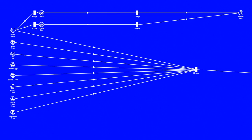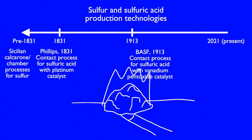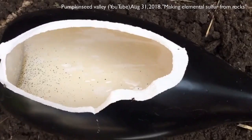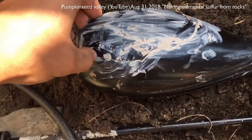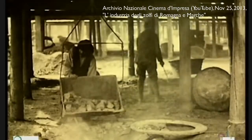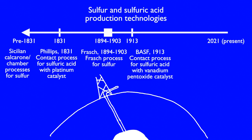For example, if I find a sulfur ore like pyrite, I would need to use a Sicilian calcarone process where I pile up the ore over a trench and set up a fire underneath it, or use a chamber process where I put the ore into a container and build a fire around it. Such a process had been demonstrated by YouTube creator Pumpkin Seed Valley in a 2018 video, but it was a whole lot less gentle and less controlled than electrolysis. The Frasch process, developed by Hermann Frasch between 1894 and 1903, involves drilling a well a few hundred meters deep into a sulfur deposit, pumping boiling water into the well to melt the sulfur, and then pumping the liquefied sulfur to the surface. Needless to say, this method was also inaccessible to me.